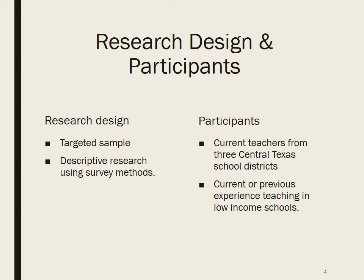This study included a population of Central Texas teachers who currently or have previously worked in a high-poverty school that has also faced low student performance. Geographically, these schools were situated in both urban and rural areas; currently, data has been gathered from individuals in mostly urban and suburban settings. A targeted sample method was used in this research, with teachers who currently work or have previously worked at low-income, low-achieving schools asked to participate.